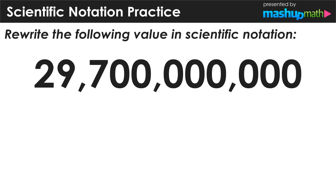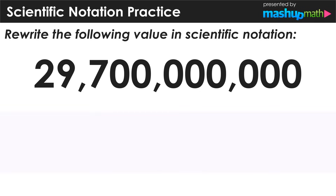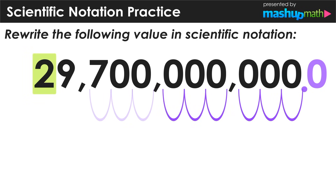So now let's take on another example of an even bigger number — in this case 29,700,000,000. So this is nearly 30 billion, a very, very large number, and we want to use scientific notation to rewrite this value in a more convenient way. Again, we can add point zero to the end of the value as a placeholder so that we can visualize where that decimal point would be. And now we have to figure out how many place values are in between the decimal and the first non-zero digit, in this case the 2.